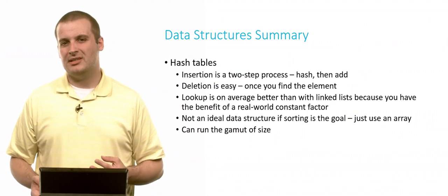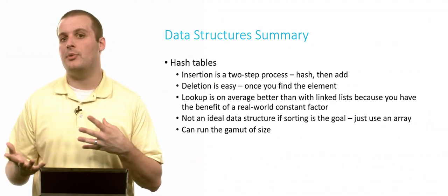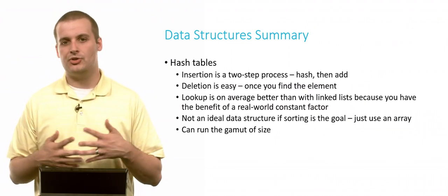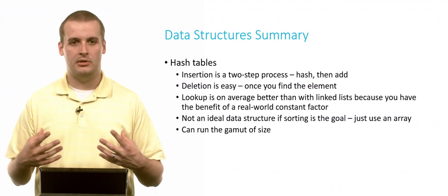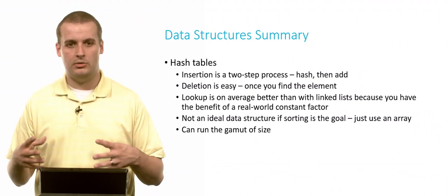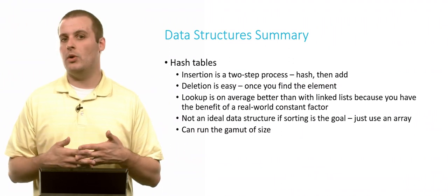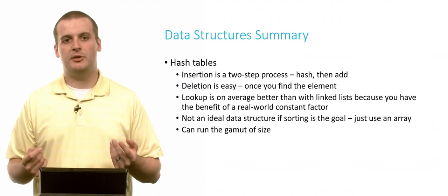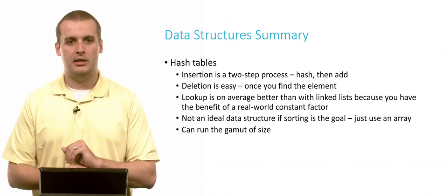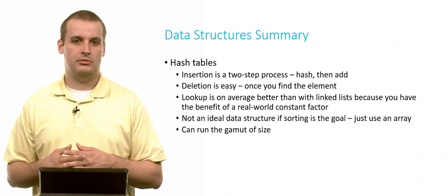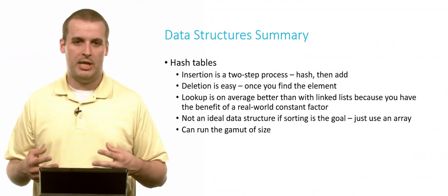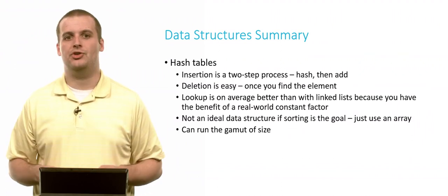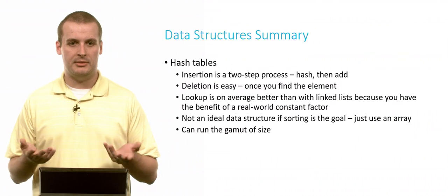Hash tables. Insertion into a hash table is fairly straightforward. It's a two-step process. First, we need to run our data through a hash function to get a hash code. And then we insert the element into the hash table at that hash code location. Deletion, similar to linked list, is easy once you find the element. You have to find it first. But then when you delete it, you just need to exchange a couple of pointers if you're using separate chaining. If you're using probing or you're not using chaining at all in your hash table, deletion is actually really easy. All you need to do is hash the data and then go to that location. And assuming you don't have any collisions, you'll be able to delete very quickly.